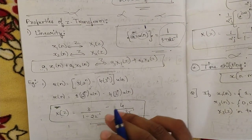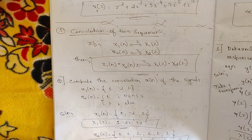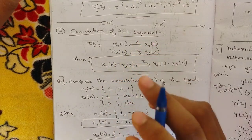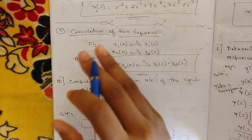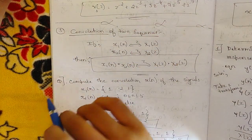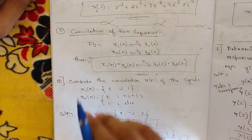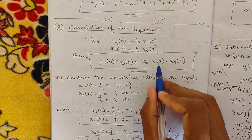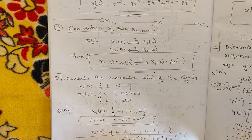The next property is convolution of two sequences. If you are given two sequences x1(n) and x2(n), you convert them to X1(z) and X2(z) in the Z-plane. The convolution — or multiplication — of two sequences says that the Z-transform of x1(n)·x2(n) equals X1(z)·X2(z). This is basically the convolution property.